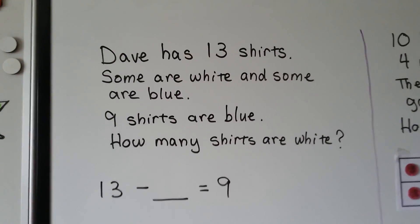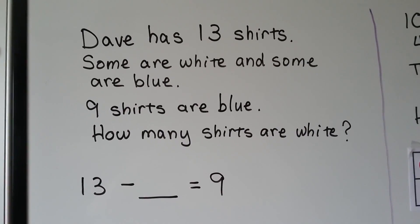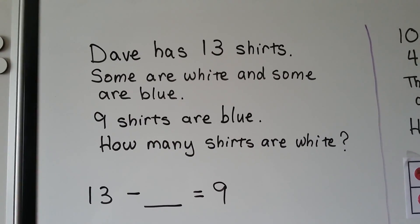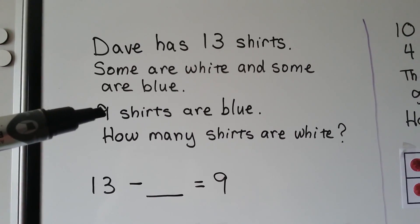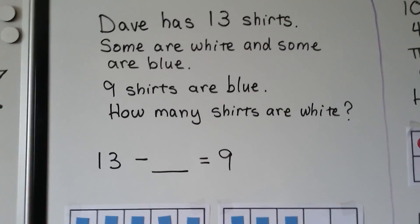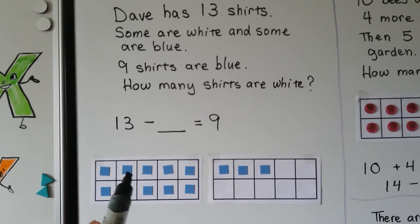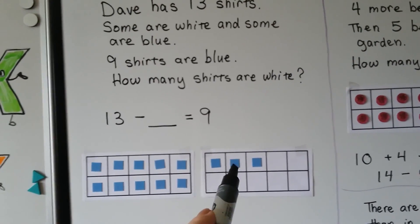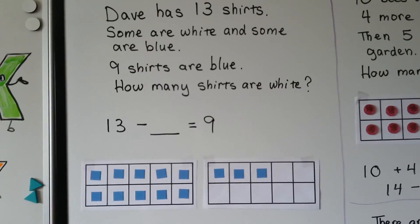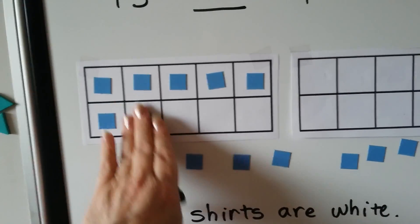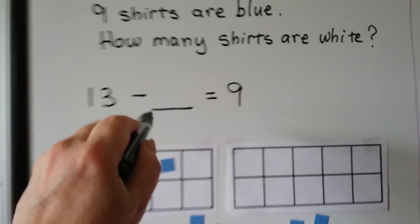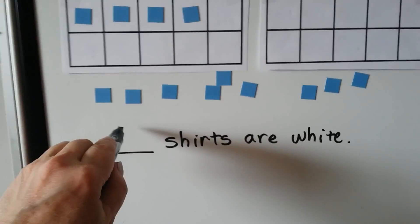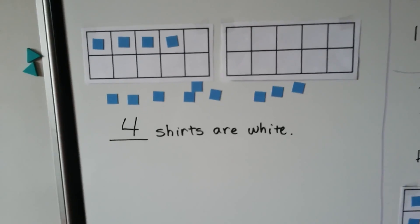Dave has 13 shirts. Some are white and some are blue. 9 shirts are blue. How many shirts are white? We need to find how many shirts are white. We need to use that he has 13 but 9 of them are blue. We can act it out with counters — make 13 counters for 13 shirts: 10, 11, 12, 13. And we can take away 9 counters for the 9 blue shirts: 1 through 9. How many are left in the 10 frame? 4. So 4 shirts are white. We took away the 9 blue counters and it left 4.